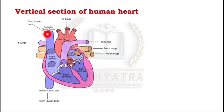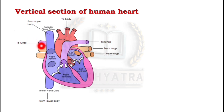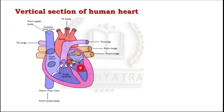Looking at the vertical section of the human heart: the superior vena cava enters from the upper body to the right atrium; the inferior vena cava enters from the lower body to the right atrium. The right ventricle connects to the pulmonary artery with two branches — one to the left lung and one to the right lung. The left atrium has four pulmonary veins — two from the right lung and two from the left lung. The left ventricle is connected to the aorta, which supplies oxygenated blood to all body parts.